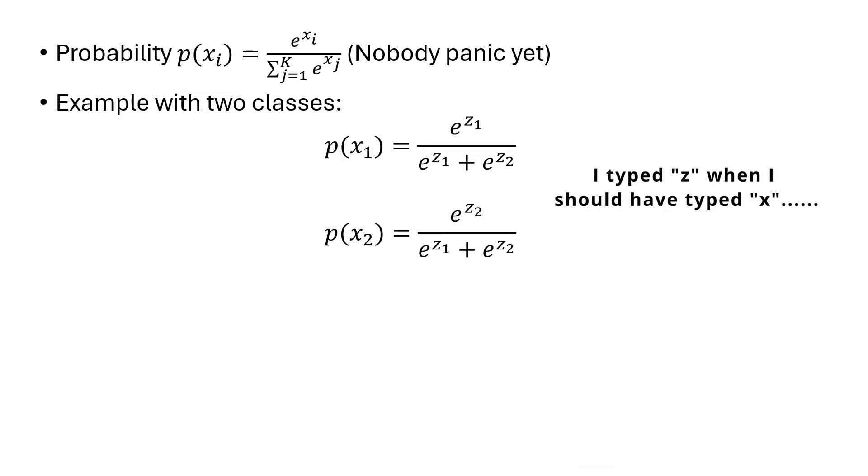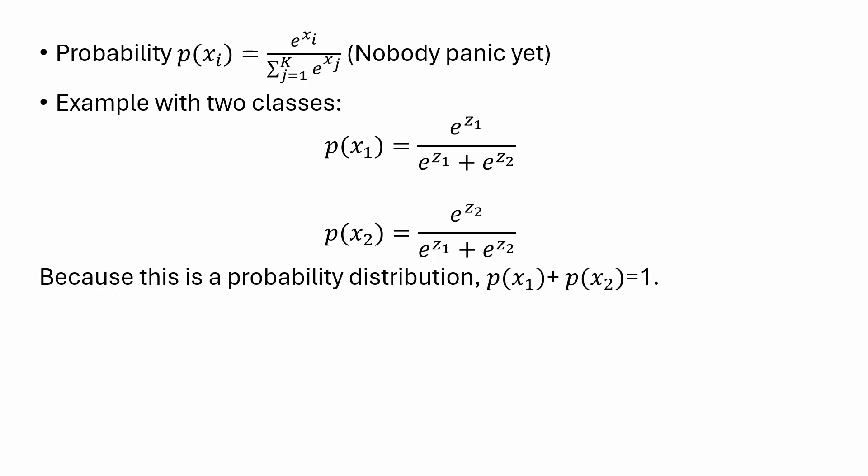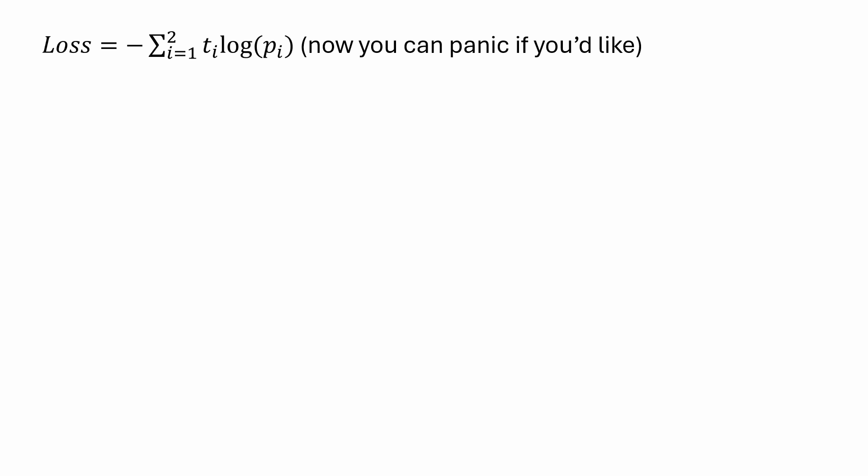And that looks like this. Remember that this is a probability. x1 is the probability of it being zero, x2 is the probability of it being one. These probability distributions add up to one. This was a buildup so that we can calculate the cross-entropy loss. For this case, we are doing it with two classes. You can start panicking now if this equation freaks you out because there are logs involved and things get kind of weird.